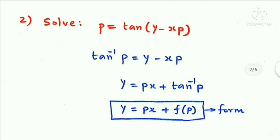Next question: solve p = tan(y - xp). Taking tan inverse on the left side gives tan⁻¹p = y - xp. Moving -xp to the left side gives y = px + tan⁻¹p.